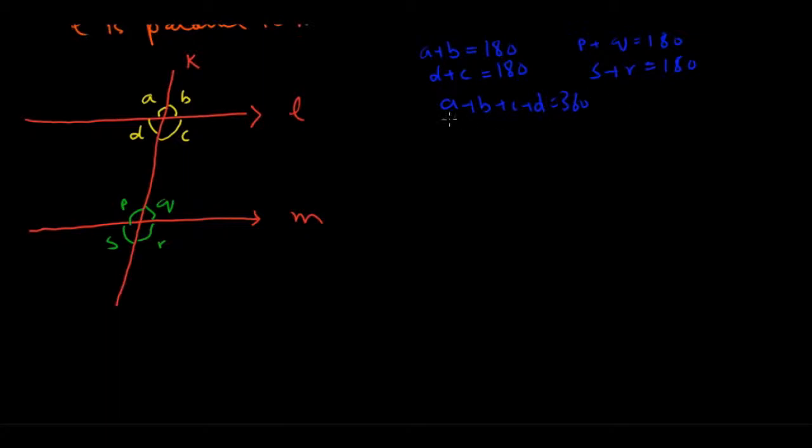Also, A, B, C, D will add up to 360, and P, Q, S, R would add up to 360. What about vertically opposite pairs? Pairs of vertically opposite angles.